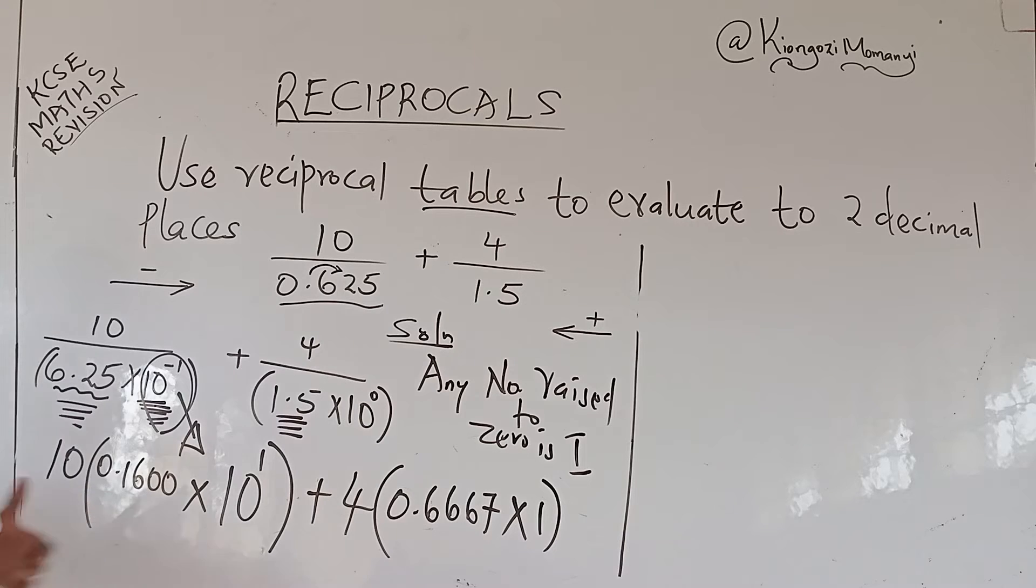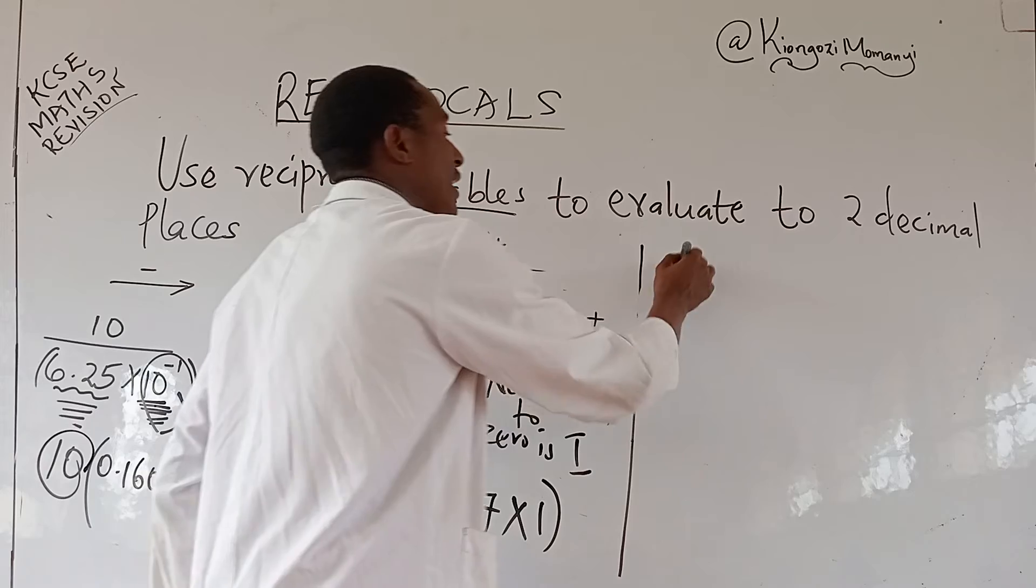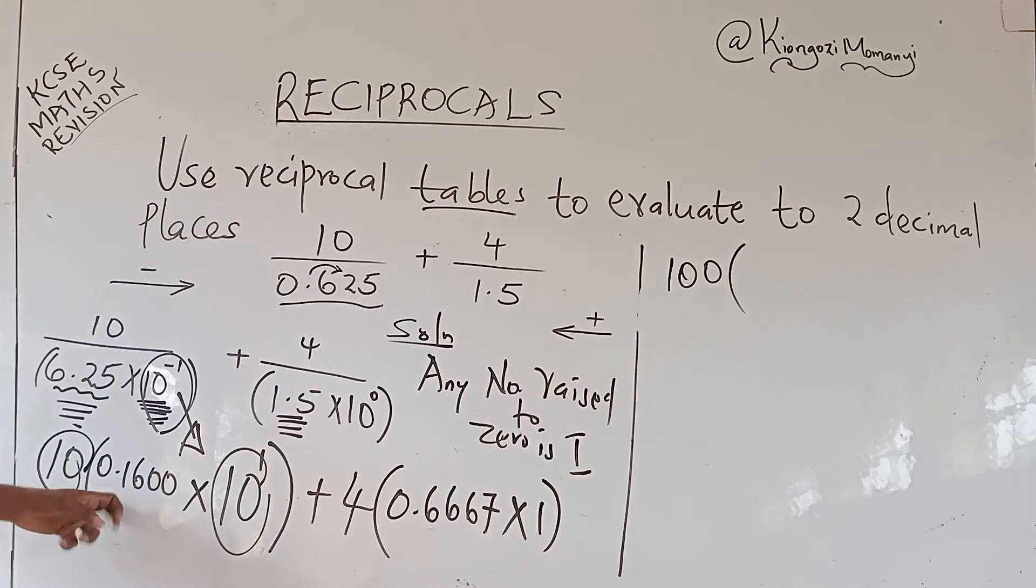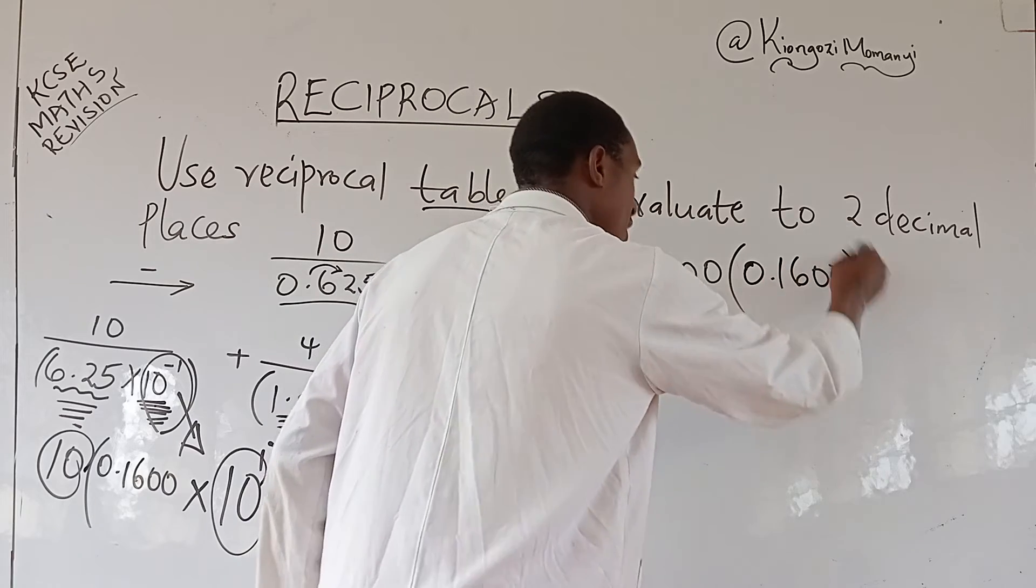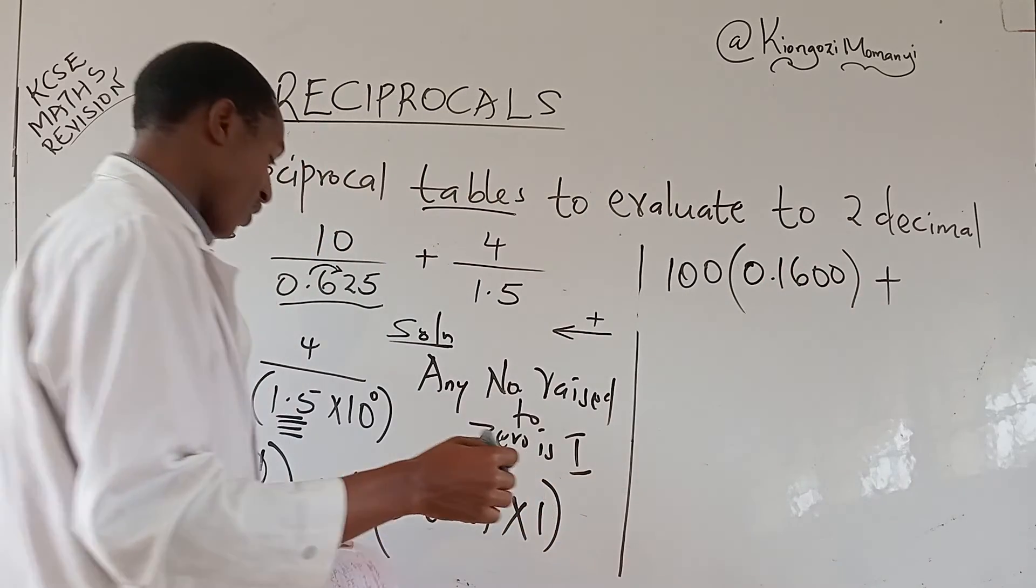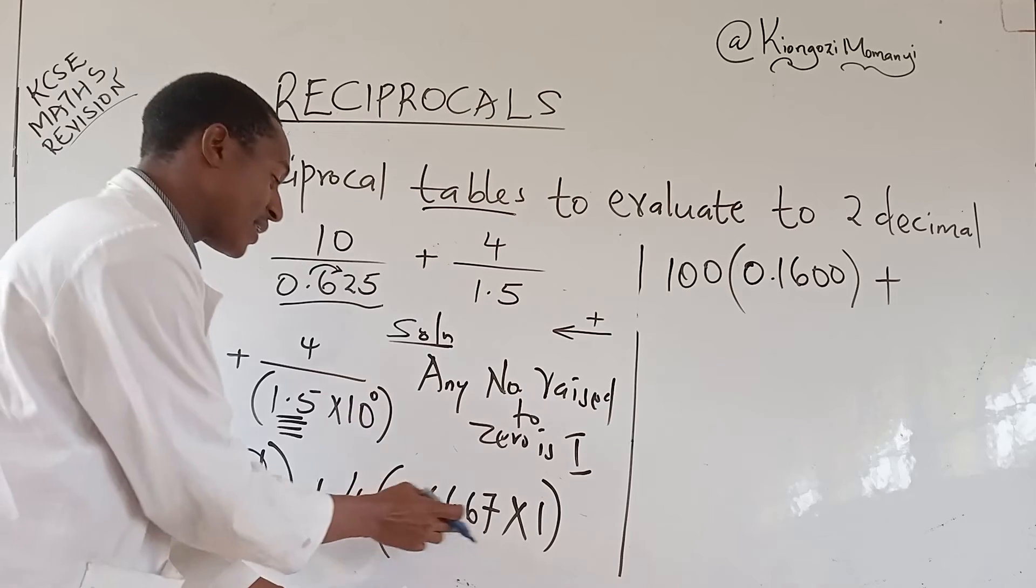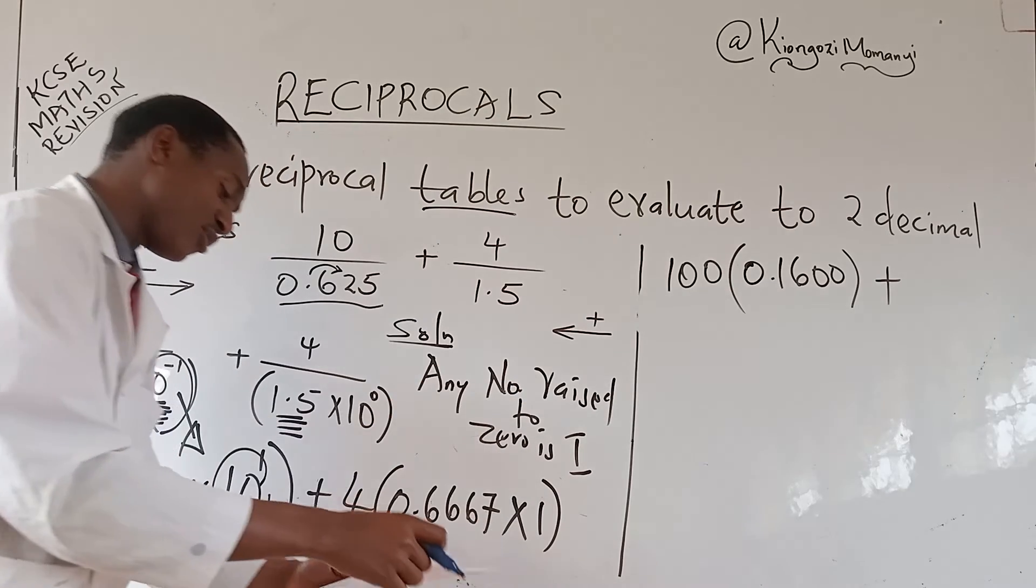So you are through. This is 10 times this. So 10 times 10 is 100 multiplied by 0.01600.